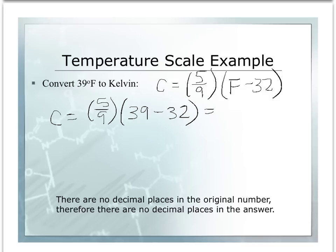We are going to take 5/9 and multiply it by the difference of 39 minus 32. Enter this into your calculator, and you will get 3.888 degrees Celsius. But remember, we want to keep the same number of decimal places as our original number. Our original number, 39, didn't have any decimal places, so we are going to round up to 4 degrees Celsius for our next equation.